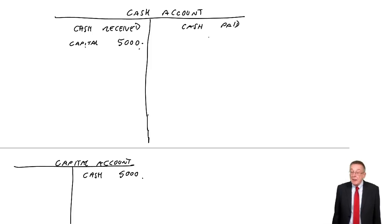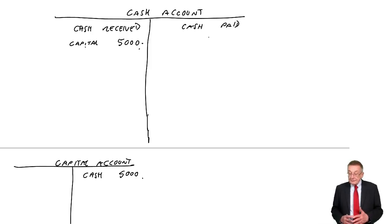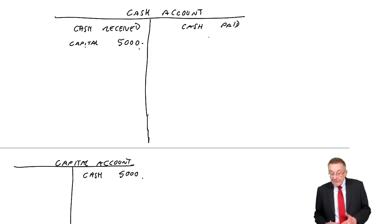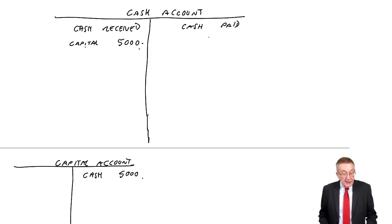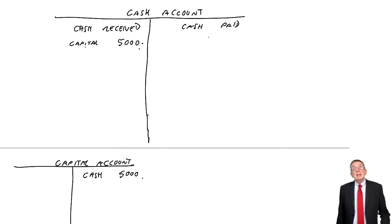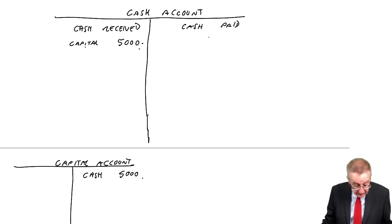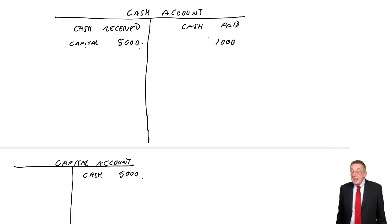Every transaction will have two entries on the other, opposite pages. Let's move to the next one: we buy a car for £1,000 cash. Two effects — the first effect is we've less cash. So let's turn to our cash account — we've paid cash, so we'll put 1,000 on the right-hand page.